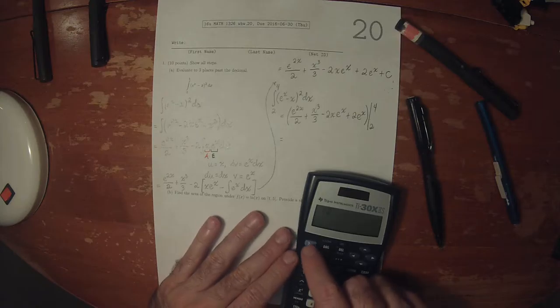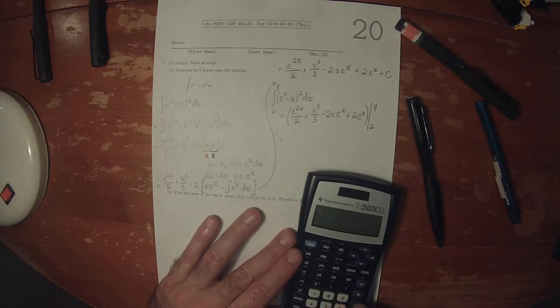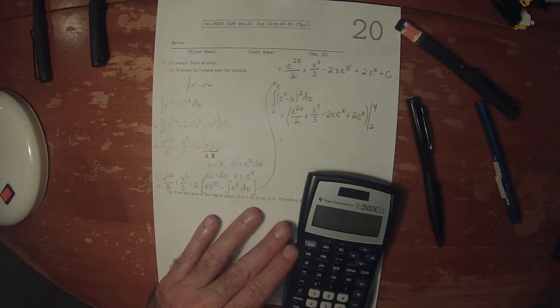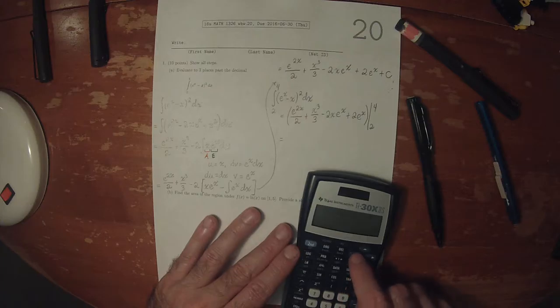So exponential 2 times 4 plus 4 cubed over 3 minus 2 times 4 cubed over 3 minus 2 times 4 times e to 4 plus 2 times e to 4.